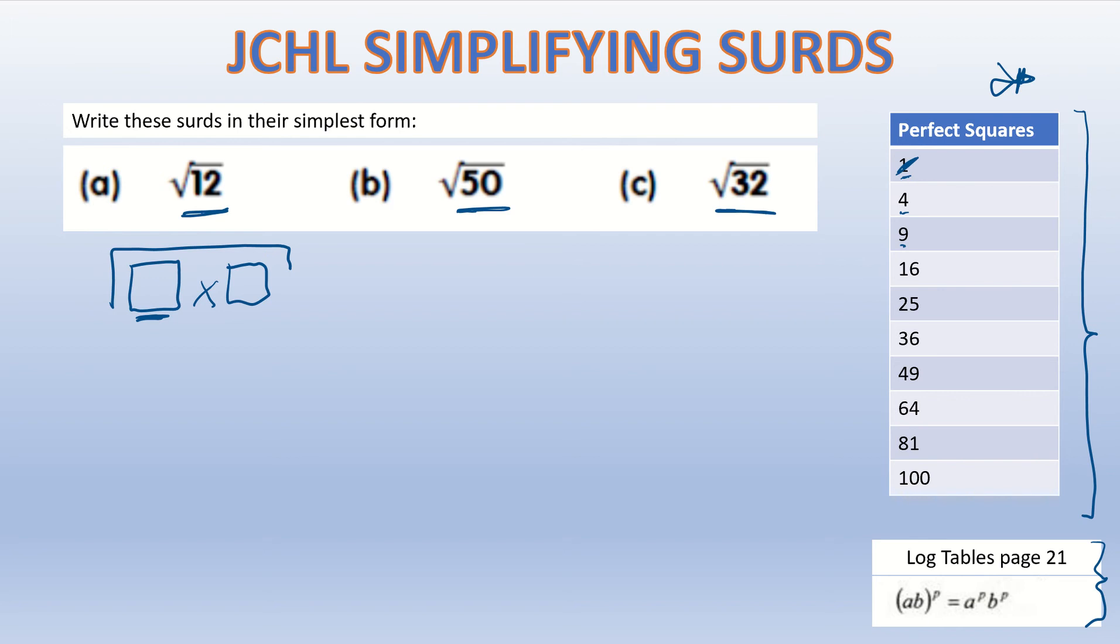As we go down, the numbers just keep getting bigger and bigger so they're not going to go into 12. So I'm going to pick 4. 4 is the biggest perfect square that goes into 12 and you'll see why I need that in just a minute.